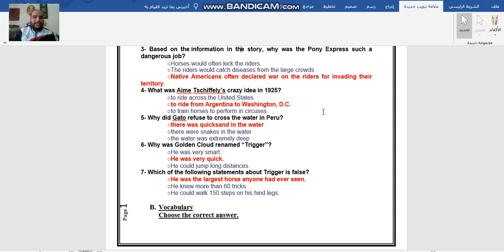What was Amy Schifley's crazy idea? In 1925, everyone remembers that he wanted to travel 10,000 miles from Argentina to Washington D.C. That was his crazy idea, and he succeeded in doing it with the help of the two horses, Gato and Mancha.